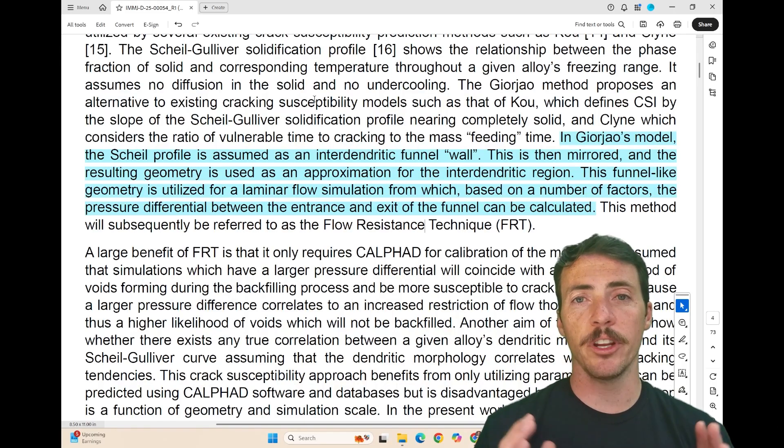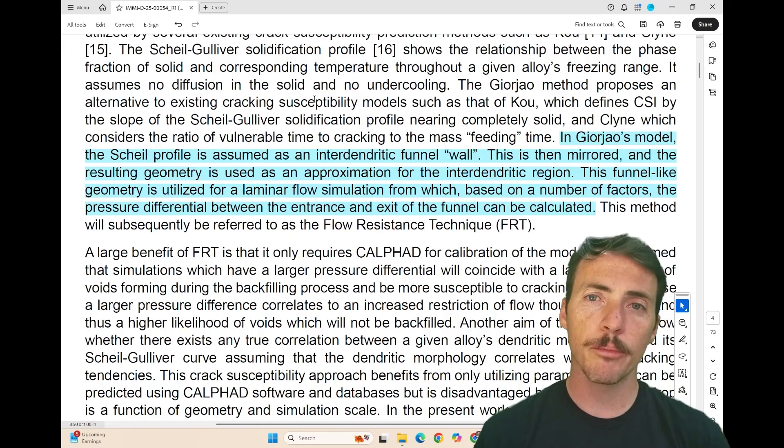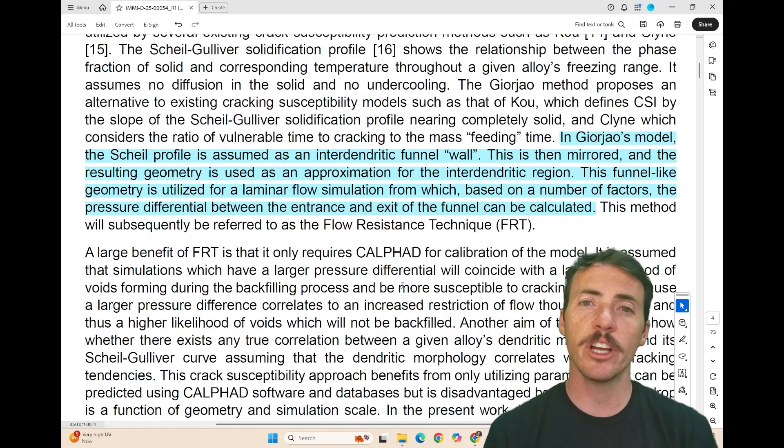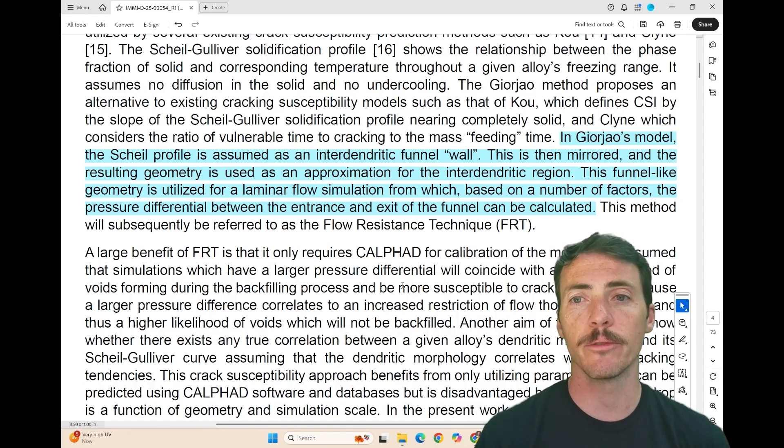Now modeling these has been a challenge traditionally, but one of the more interesting approaches that's come out only since 2021 is this Zhou Zhao's model, which uses the shield profile to assume the interdendritic wall, funnel wall, and then this is mirrored, and the resulting geometry is used as an approximation for your interdendritic regime. It's not perfect, but that's an approximation.